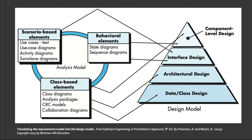Another design artifact is the architectural design. The architectural design is a representation of the framework of a computer-based system, and it is derived from the requirements model gathered by the software engineers. Specifically, class and collaboration diagrams are useful here. Just as in the data design, the class-based elements you already created in previous exercises can also be used in the architectural design.